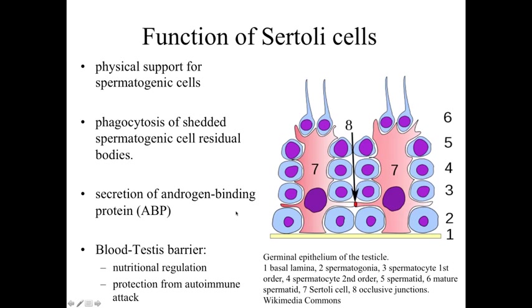Sertoli cells are also involved with secretion of androgen-binding protein (ABP), which helps transport testosterone throughout the body. Critically, they establish the blood-testes barrier. As seen in the diagram, two Sertoli cells come together at a boundary point, creating a barrier so that developing sperm cells closer to the lumen — which begin expressing different proteins than other body cells — do not trigger an immune response. This blood-testes barrier protects the developing sperm cells from autoimmune attack.